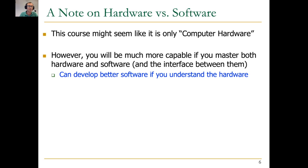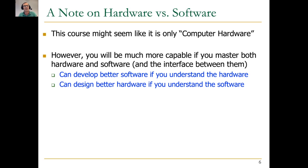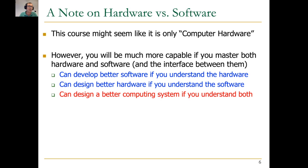Even if you're not doing co-design — which I think is really important going into the future, and a lot of the startups and major companies are doing co-design today — you can develop better software if you understand the hardware. And you can design better hardware if you understand the software. Having an understanding of these different levels of the transformation hierarchy is really important. You can design a better computing system if you understand both, and that's what's happening in a good chunk of the industry today. Hence the expanded view.